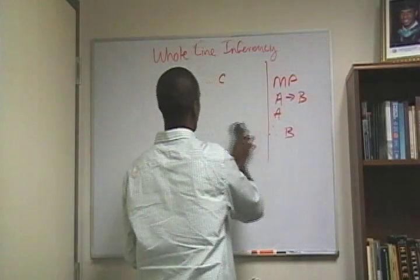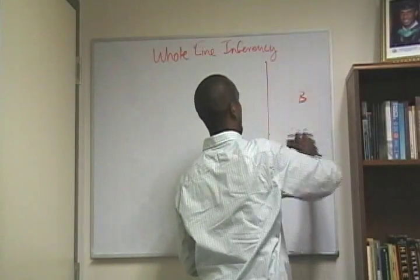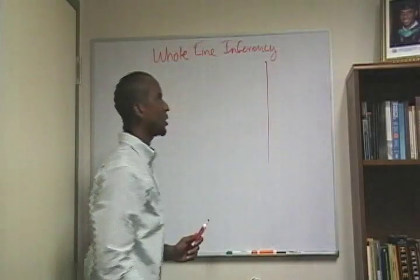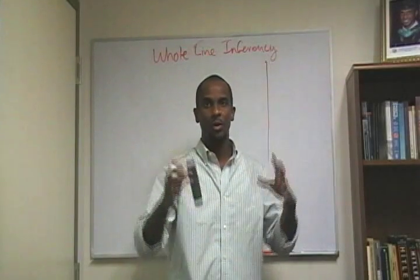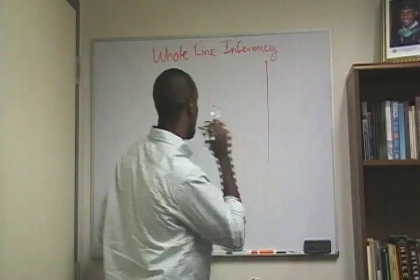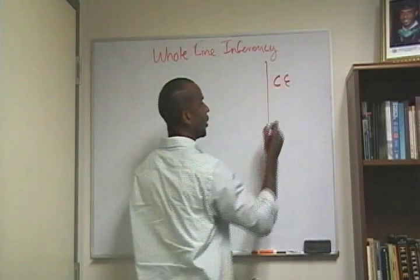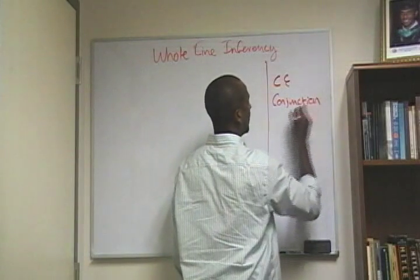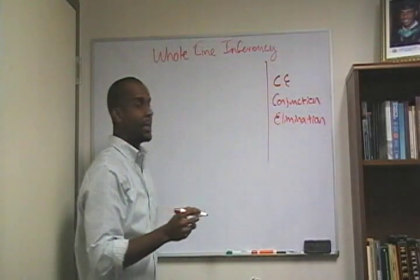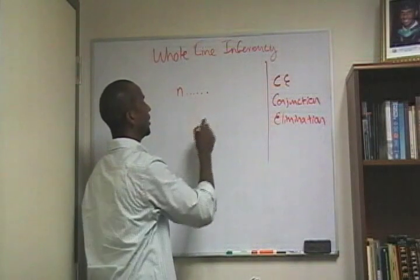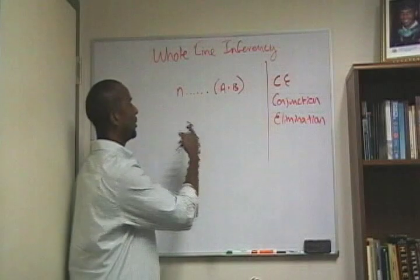The first is conjunction elimination. So let's do conjunction elimination. And then the second will be applying some of the replacement rules that we learned from the previous video in attempting to solve some of our whole line inferencing problems. So the first thing I'm going to introduce is the idea of CE — abbreviated CE — which is called conjunction elimination.